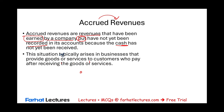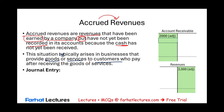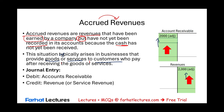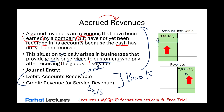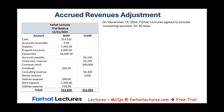Accrued revenues happen when a business provides goods or services and the customer promises to pay later. The journal entry looks like this: assuming we earned $2,000, accounts receivable goes up and revenues go up. This is how we book accrued revenues — debit accounts receivable, credit revenues. Accounts receivable is an asset; revenues is an income statement account. Now let's take a look at an example: on December 12, 20X5, Farhat Lectures agreed to provide consulting services for 30 days.